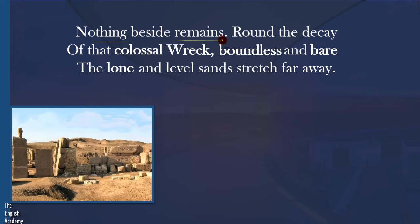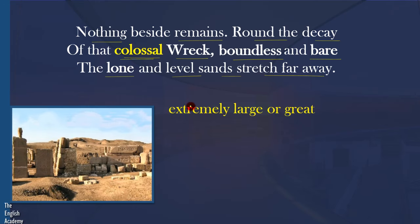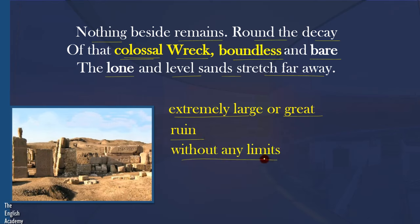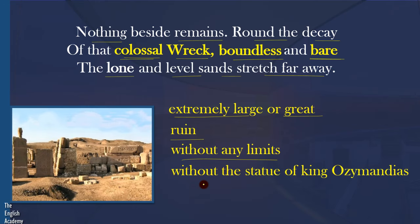'Nothing beside remains. Round the decay of the colossal wreck, boundless and bare, the lone and level sands stretch far away.' Colossal means extremely large or great. Wreck means ruin — the remains. Boundless means without any limits. Bare means without the statue of King Ozymandias. Lone means the only survivor.